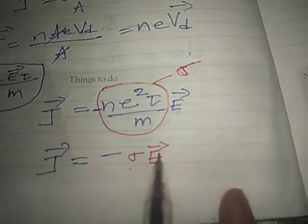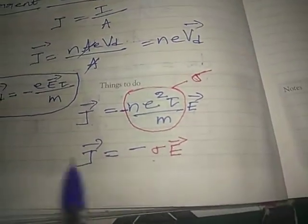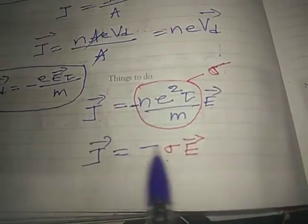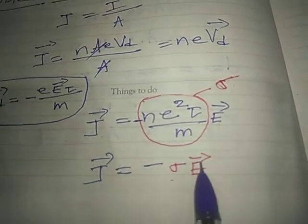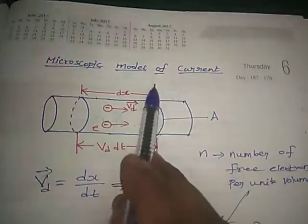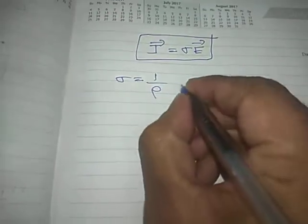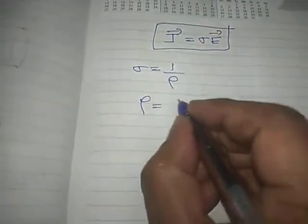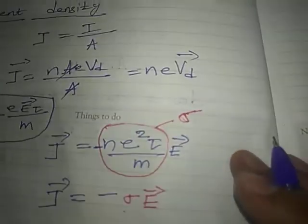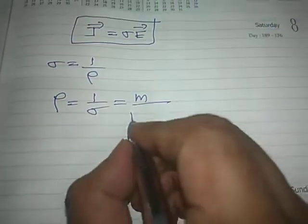Since the electric field and current density act in the same direction, we neglect the negative sign. Defining conductivity σ = ne²τ/m, we get J vector = σE vector. This is the microscopic model of current. Conductivity σ is inversely proportional to resistivity ρ, so ρ = 1/σ = m/(ne²τ).